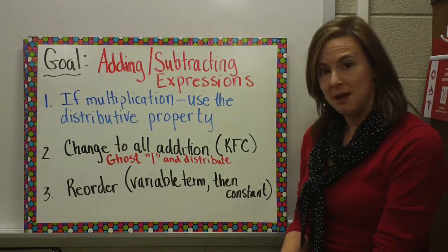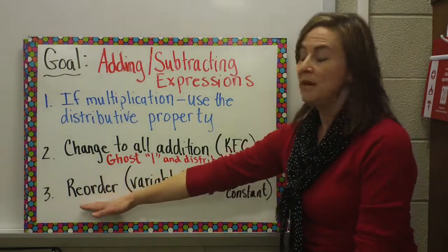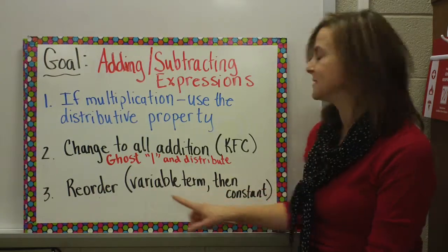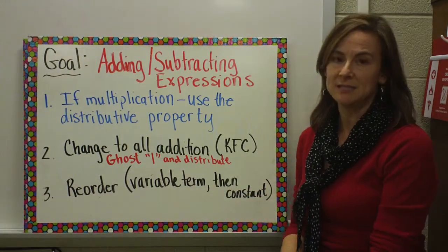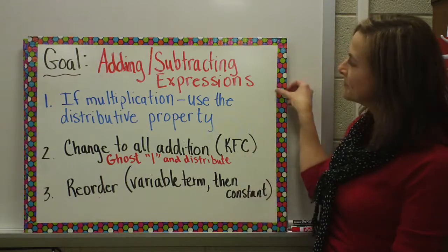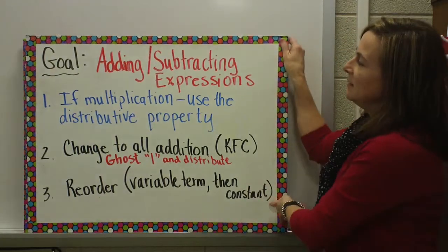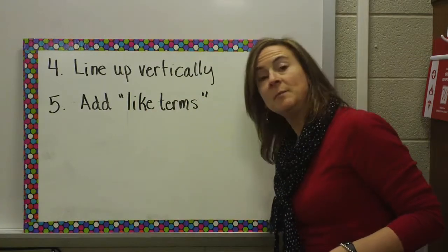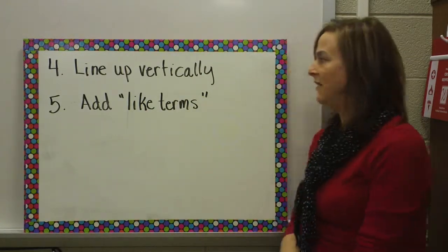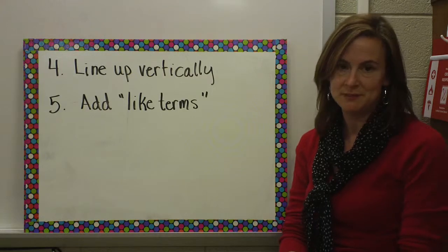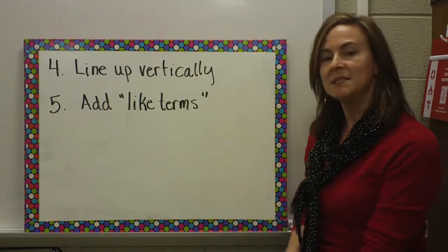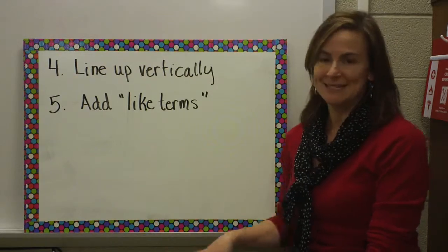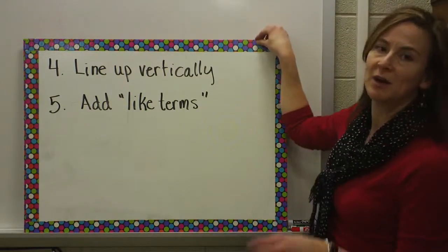The third step is reorder — make sure the variable term is first and then the constant. Step four, line up vertically. And step five, add the like terms. Let's put these steps to our examples and see just how they work.